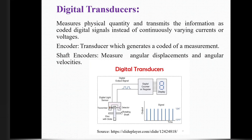Next is the digital transducer. It measures digital quantities and transmits the information as coded digital signals. An encoder is a transducer that generates coded data. Shaft encoders measure angular displacement and angular velocities. The image shows a disc with slots, rotating shaft, detector, transmitter, digital light sensor, output signal, and reader counter.